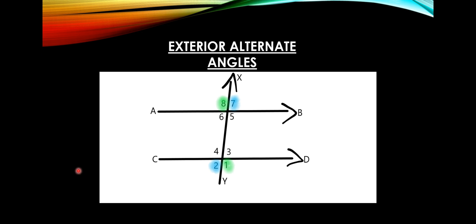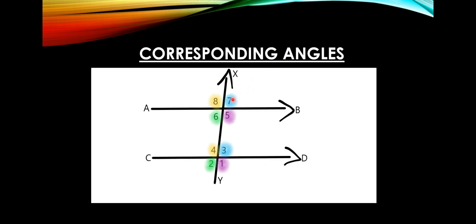Next are corresponding angles. If an angle is formed at the exterior part of the two straight lines and another angle is formed at the interior part, lying on the same side of the transversal, they are called corresponding angles. The pairs are: angle 8 and angle 4, angle 6 and angle 2, angle 7 and angle 3, and angle 5 and angle 1 — giving four pairs of corresponding angles.